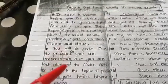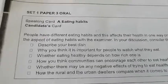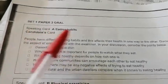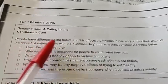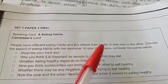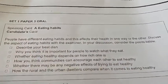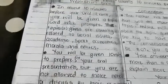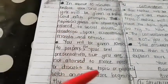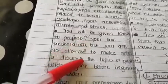An oral card is actually a card which looks like this — a speaking card. In here we have 'eating habits' as the candidate's card topic: 'People have different eating habits. This affects their health in one way or the other.' And then here you have the prompts. This is how an oral card looks like. About 10 minutes before your exam you get that card. Do not discuss with anybody, do not talk to anybody, and do not make notes.